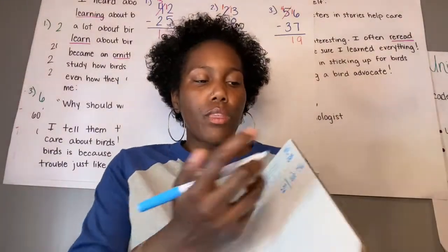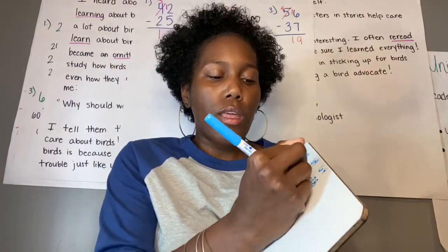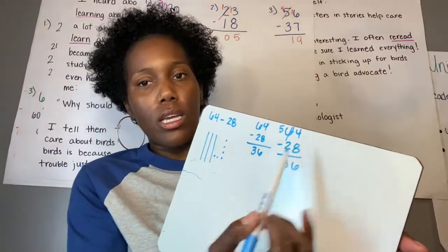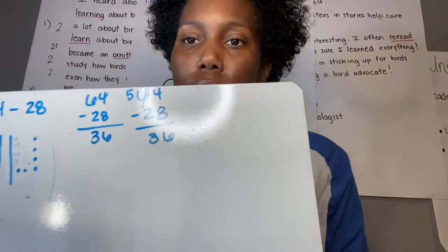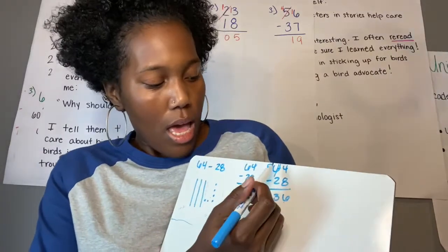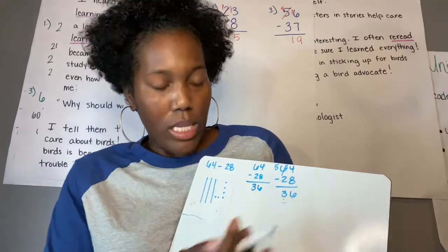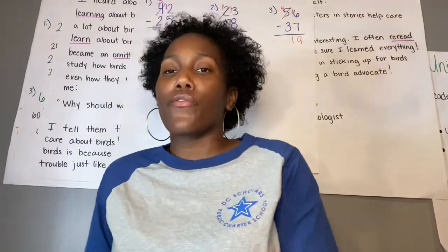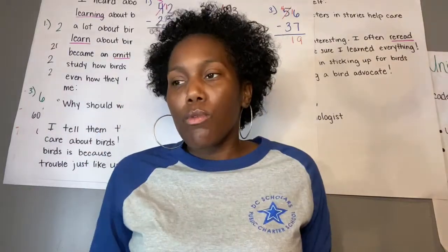So if we did it again and put our 64 minus 28 the way we worked out yesterday, it goes the same way. This turns into a 5 and that turns into 14, like our 14 dots that we had here. And then we just subtract: 14 minus 8 gives us our 6, and 5 minus 2 gives us our 3. So either way, we have 36. That's a good way to check your work. You can draw it out in picture form, because pictures also represent numbers.